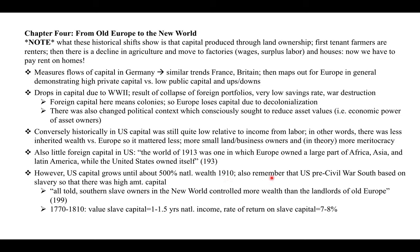He also discusses the particular case of slavery in the U.S. South, where there was a high amount of capital — all told, southern slave owners in the New World controlled more wealth than the landlords of old Europe. Between 1770 and 1810, the value of slave capital was between 1 to 1.5 years of national income, and the rate of return on slave capital was seven to eight percent. Plantation owners owned all of this human capital that they made money from without doing any work themselves, passing this wealth on.